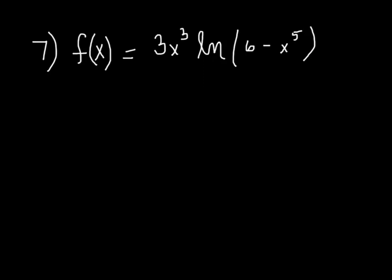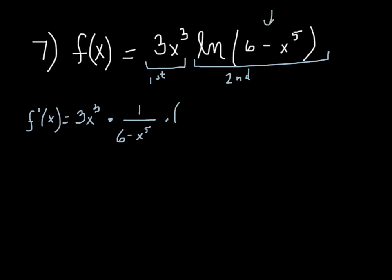In the last example, we'll kind of up it a little bit here and we'll look at basically the product rule again. Because as soon as we see something attached with our coefficient, we know that we're no longer just talking about a basic. We know that we've got to take and imply another rule there. So let's start with our derivative. The first, which is 3x cubed, times the derivative of the second. 1 over 6 minus x to the 5th times, remember now I have to go back in and take the derivative of 6 minus x to the 5th, which is simply going to be negative 5x to the 4th.